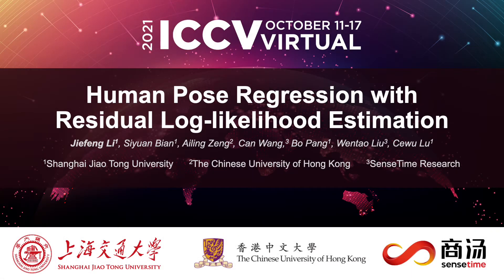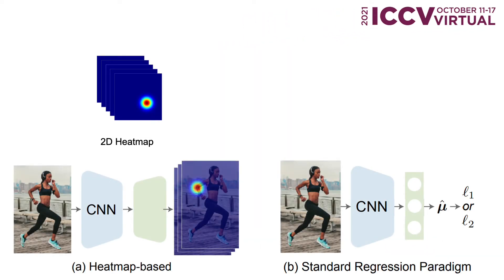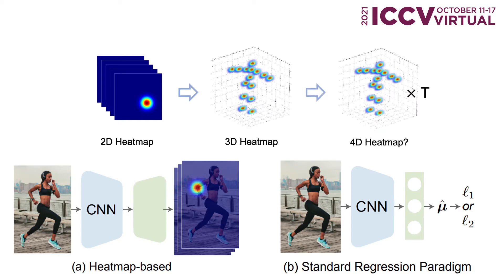We propose RLE, a brand new regression paradigm with residual log-likelihood estimation. In the field of human pose estimation, heatmap is a very popular representation. Despite the excellent performance, it suffers from high computation and storage demands. If we want to learn 3D pose in video, a 4D heatmap is needed. Besides, heatmap is hard to extend for high-fidelity human body learning. For SMPL parameters or the implicit function of clothed humans, regression is a more suitable way.